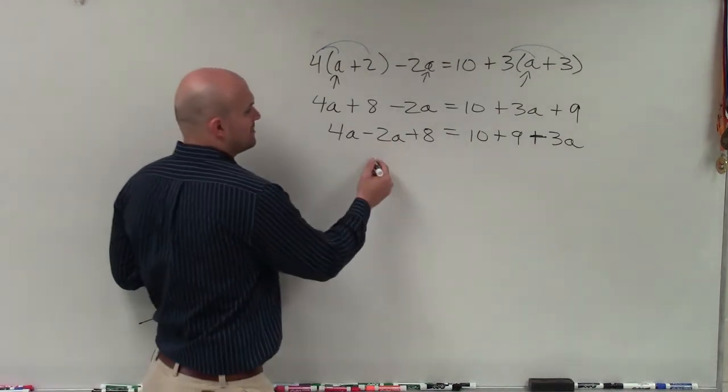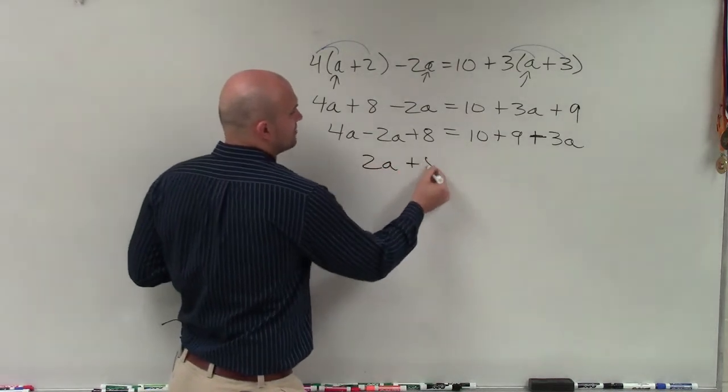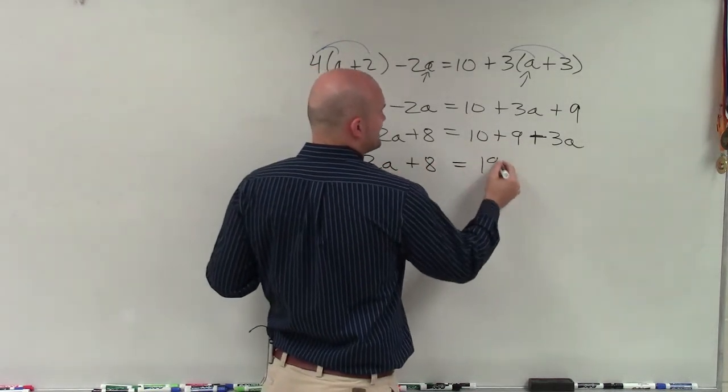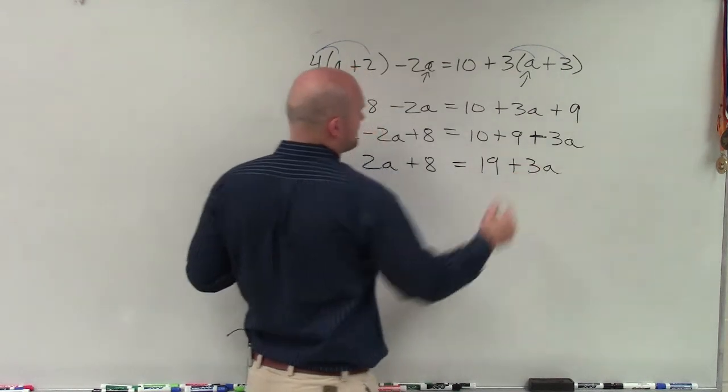So 4a minus 2a is 2a plus 8 equals 10 plus 9 is 19 plus 3a.